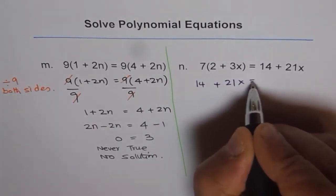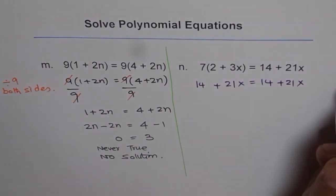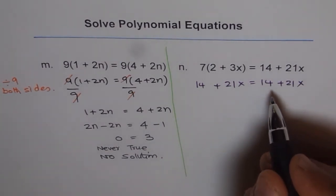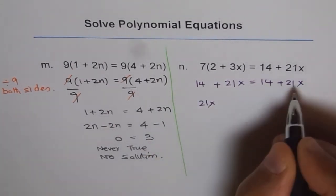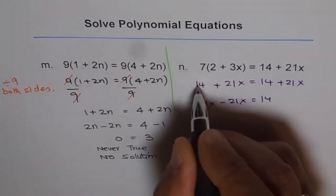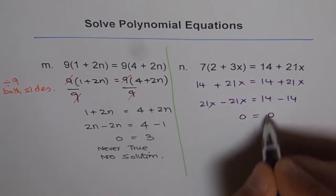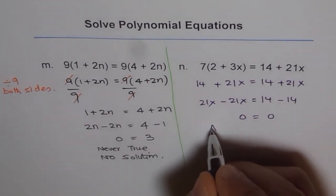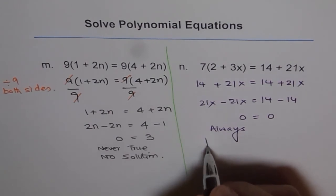21x equals to 14 plus 21x. We get the same things here. Now left side is equal to right side. Well, if we bring variables to one side, so 21x minus 21x equals to 14 minus 14. So we get 0 equals to 0. Now you see, 0 is equal to 0 always. Always true. So that means we have infinite solutions.